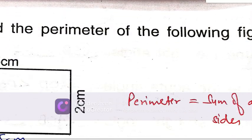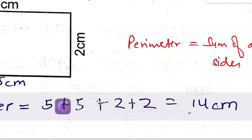Find the perimeter of the following. Perimeter means sum up all the sides, so 5 + 5 + 2 + 2, you will get 14 cm answer.